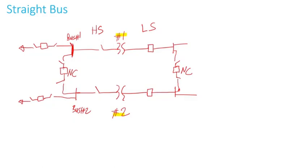Bus one and bus two are connected through a bus tiebreaker with two switches, which are normally closed. So under normal conditions there is a complete path on the high side. The same applies on the low side — you have a tiebreaker with two switches, also normally closed, so the path is completed there as well.